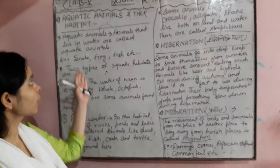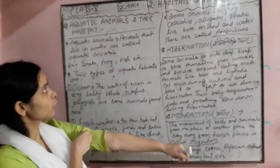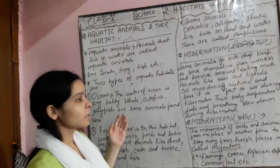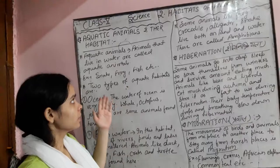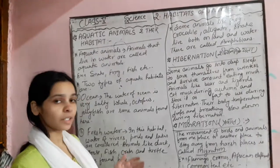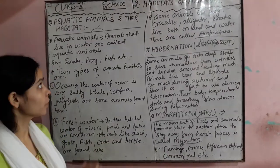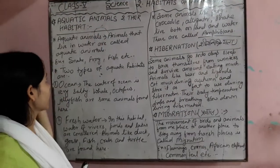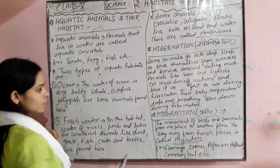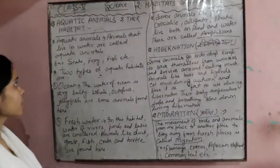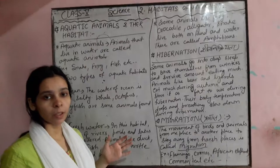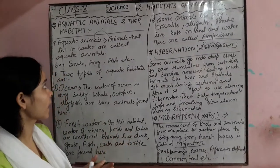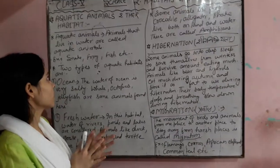Students, this is the second part of the Chapter 2 video for Class 5 Science. In the previous video we discussed habitat and land terrestrial animals and their habitat. Now in this video we will discuss aquatic animals and their habitat, and two other topics: hibernation and migration.